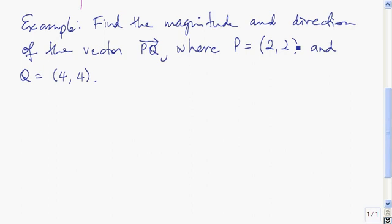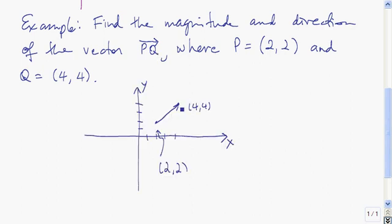Let's find the magnitude and direction of vector PQ, where the tail is the point (2, 2) and the head is the point (4, 4). Vectors are often denoted in books with bold face or a little arrow above the letter. The first letter denotes the tail and the second letter denotes the head of the vector.